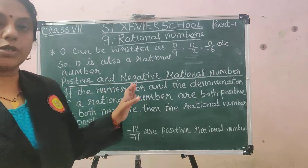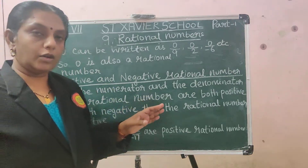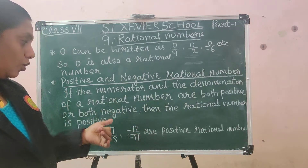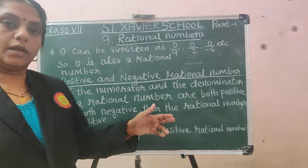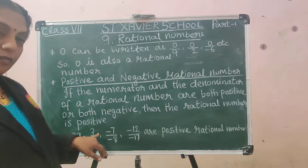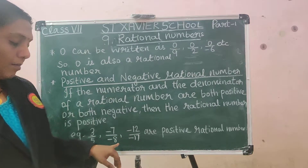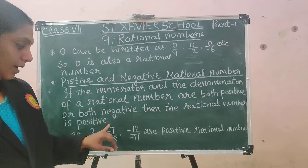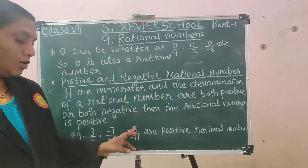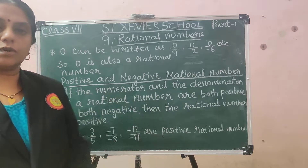The next topic is positive and negative rational numbers. If the numerator and the denominator of a rational number are both positive or both negative, then the rational number is positive. Examples: 3 by 5 — both positive; minus 7 by minus 8 — both negative, so minus and minus simplifies to give 7 by 8. Similarly, minus 12 by minus 17 — these are positive rational numbers.